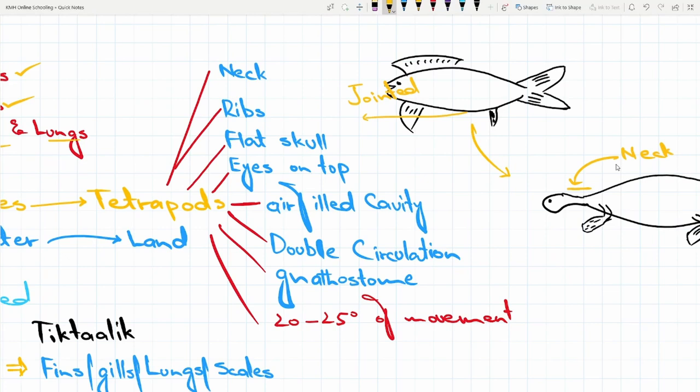Next one, आपके tetrapods में ribs के रूप में modify हुए. जो soft bones थी आपकी fishes में उन्होंने आपको ribs दी in the tetrapods. इसलिए आपके पास ये जो tetrapods हैं these are bony fishes. Bony fishes जिन्होंने खुद को modify करके tetrapods बनाए.